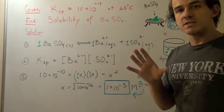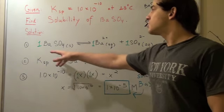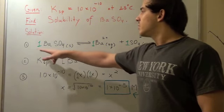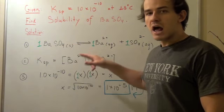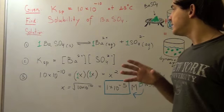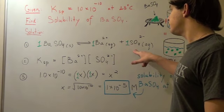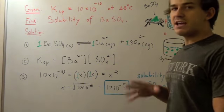We want to find the solubility of barium sulfate. To find the solubility, we must first write the dissociation reaction. One mole of solid barium sulfate dissociates into one mole of barium plus one mole of sulfate, both in aqueous form.